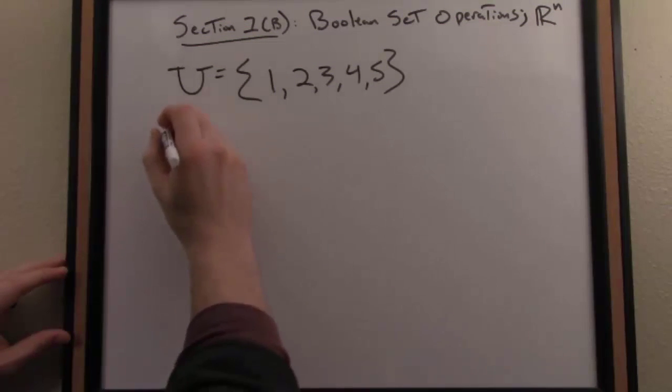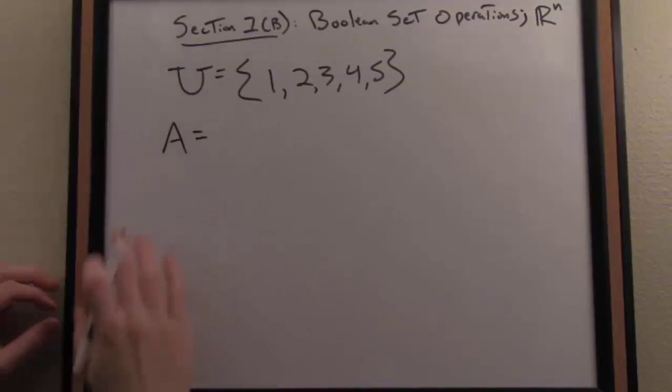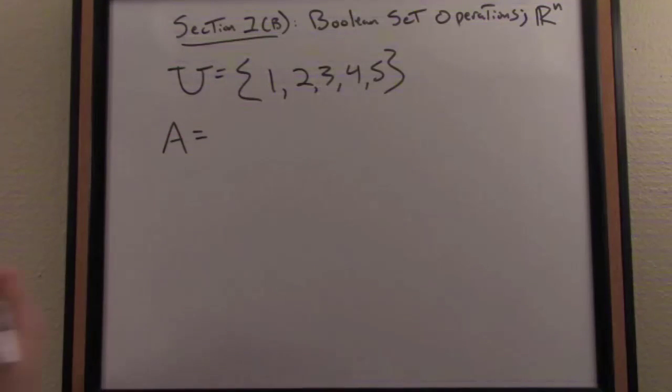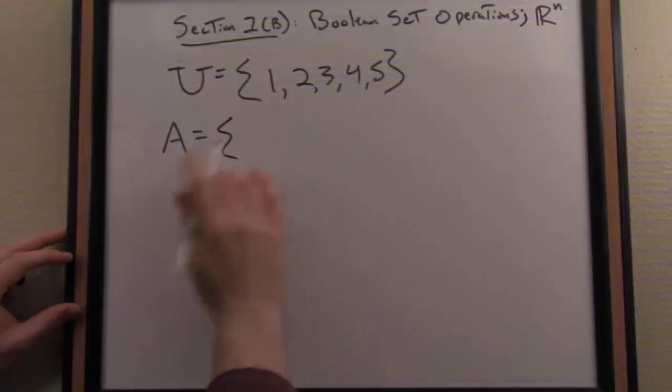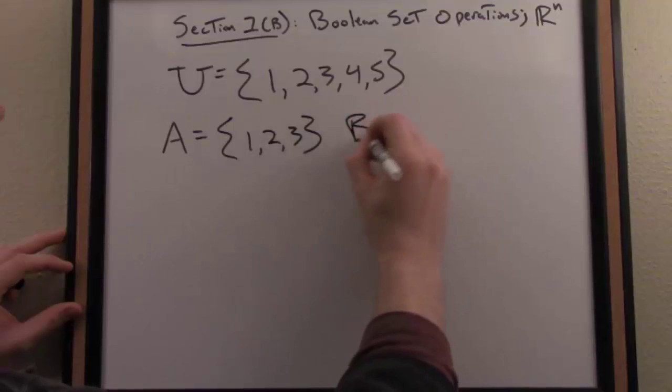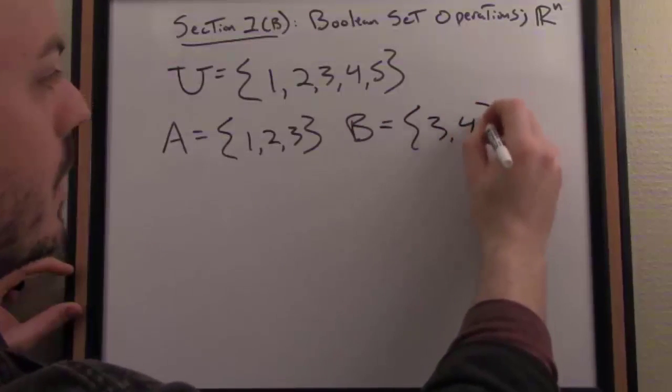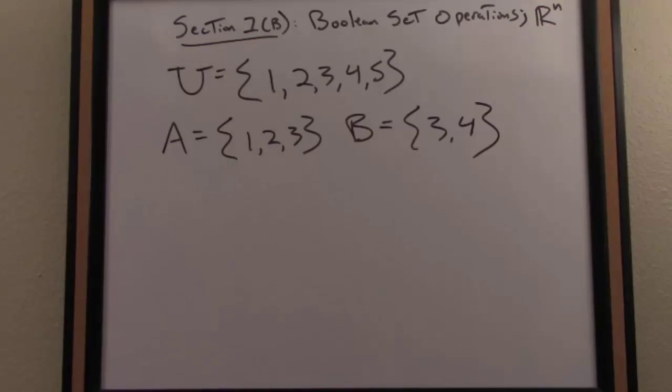So there's our universe. We denote a set with a capital letter. Now let's bring into the fold a couple other sets so we can play with these things and allow them to interact. We'll call the set A the set of numbers consisting of 1, 2, and 3. And we need maybe one more set here so we'll call the set B the set consisting of the numbers just 3 and 4. Notice both of those sets are in this universe U.